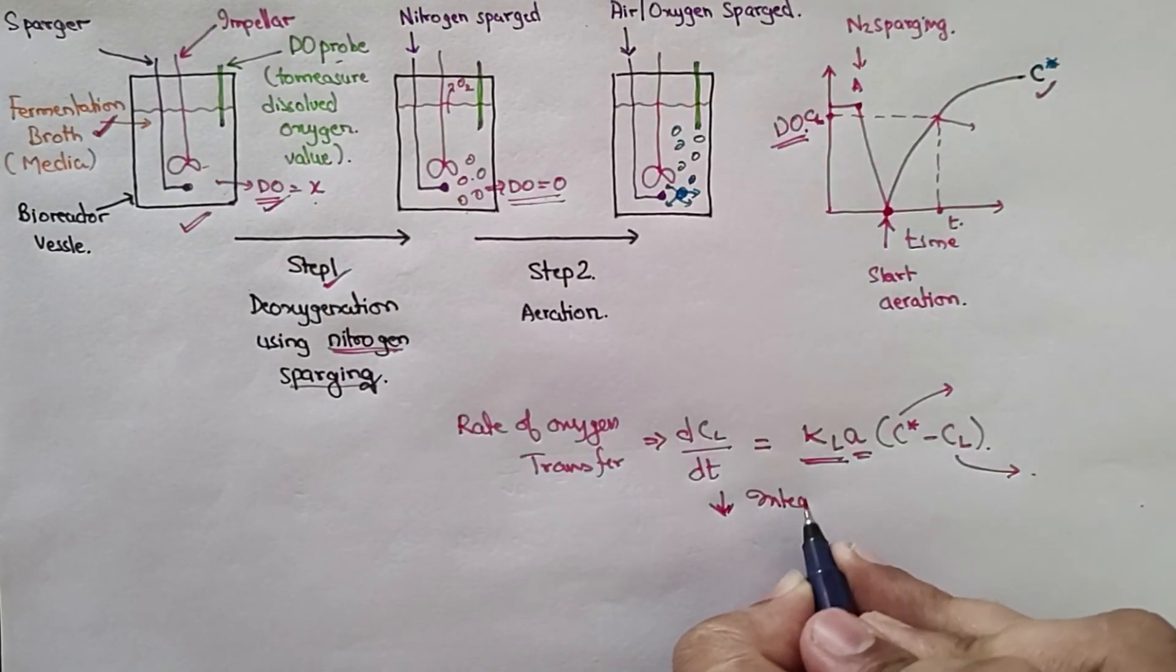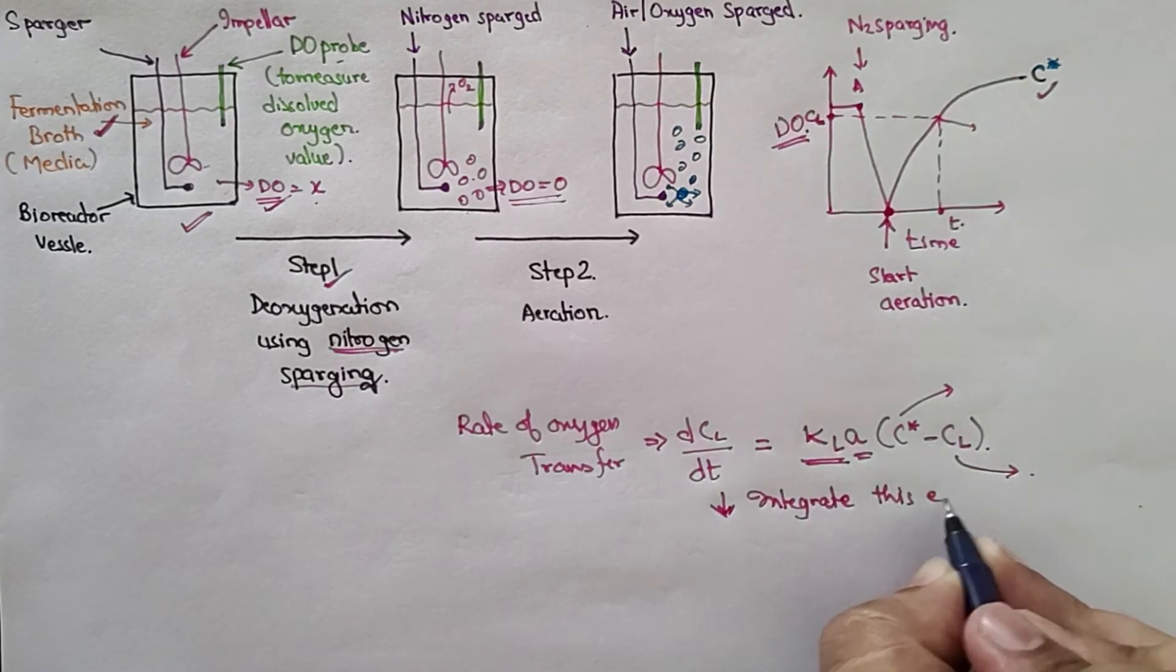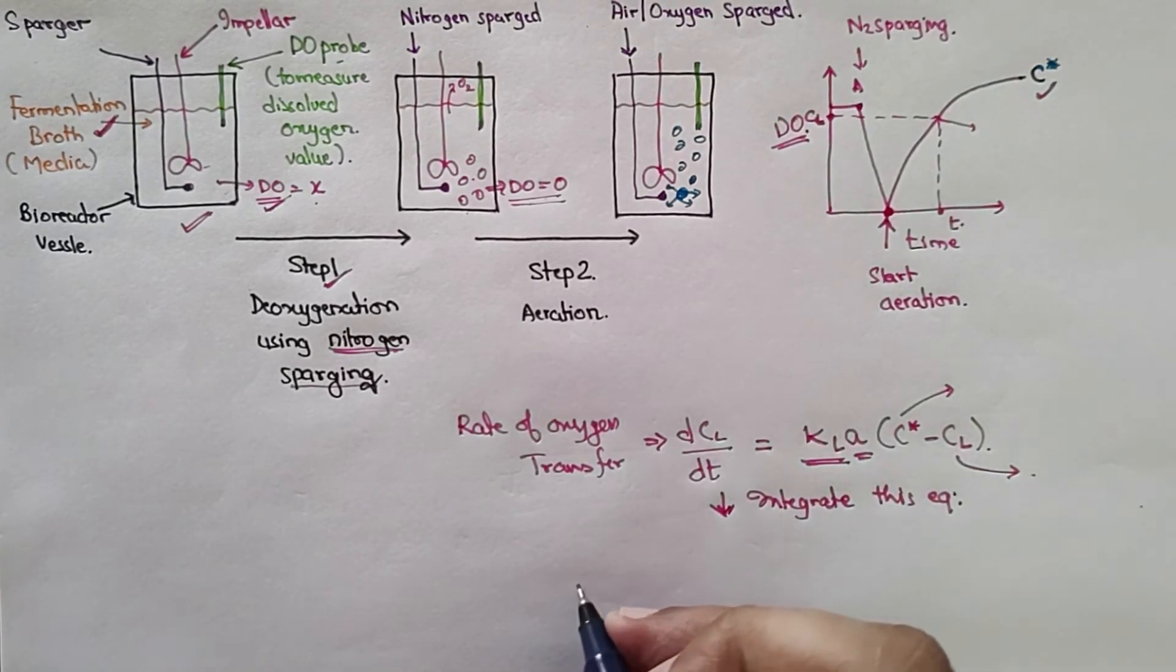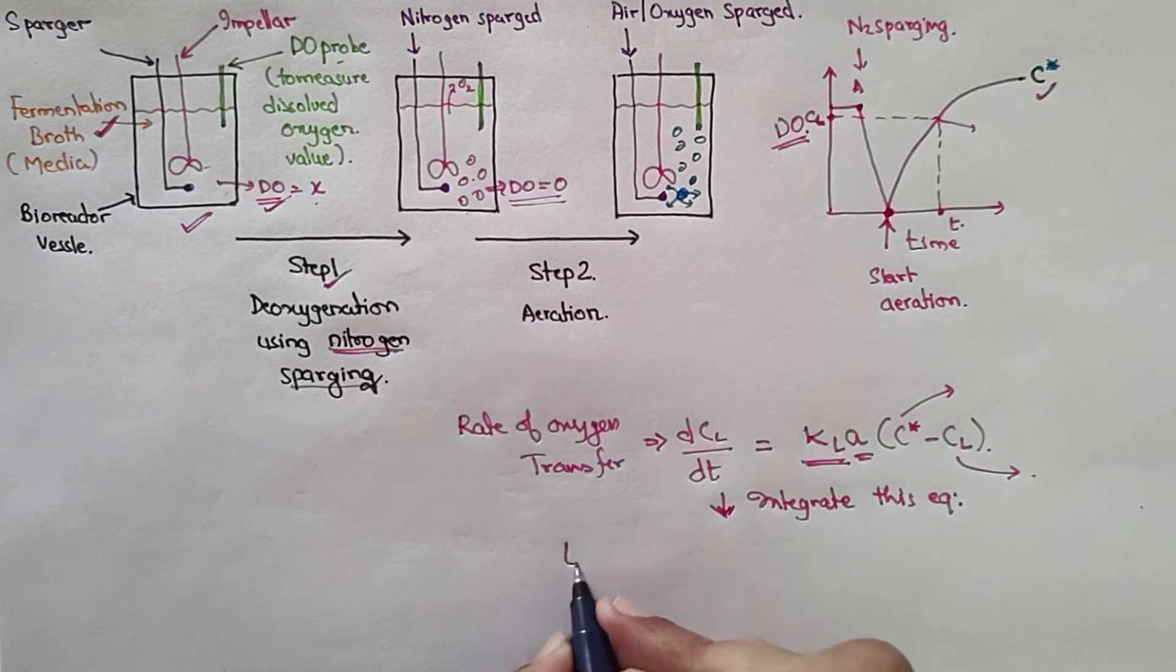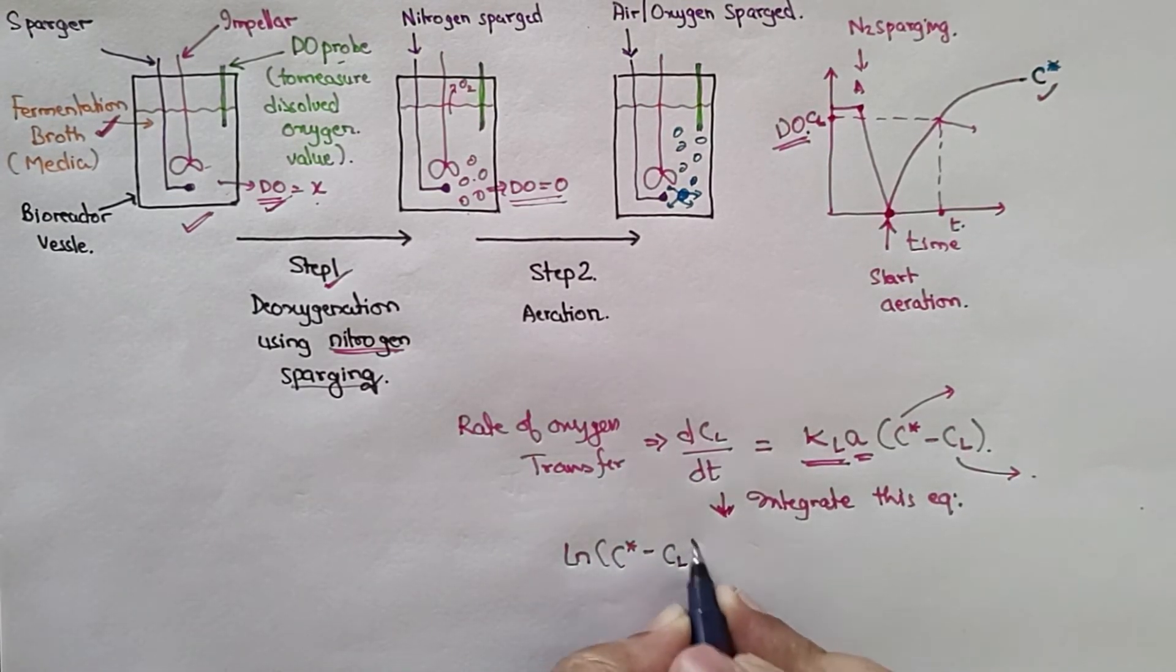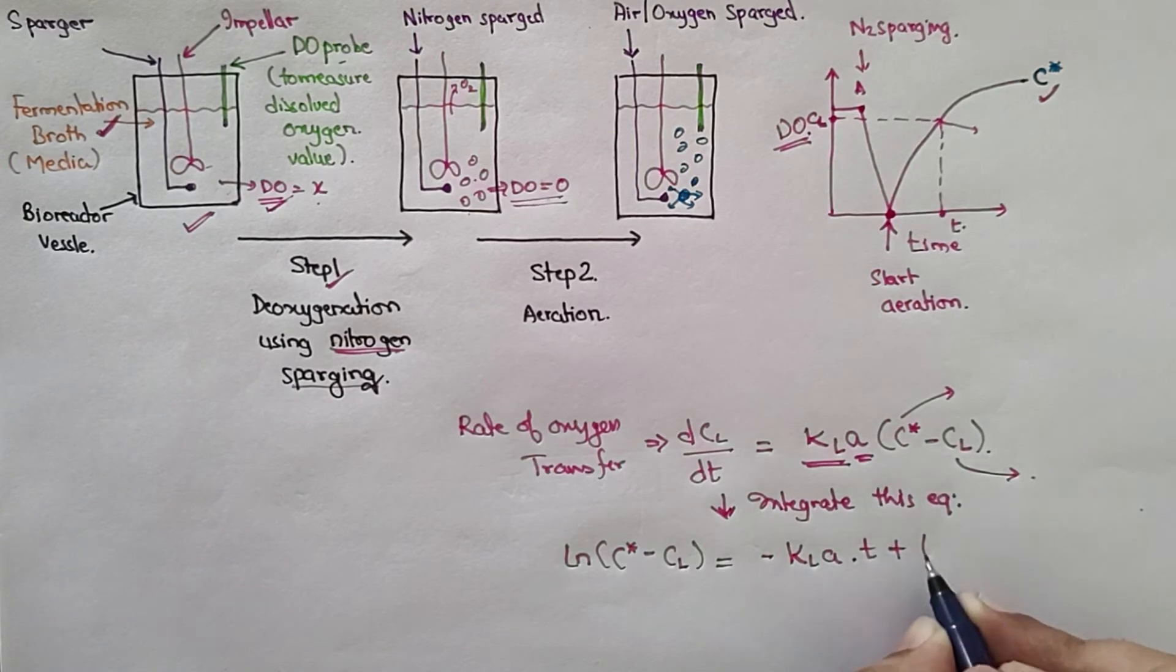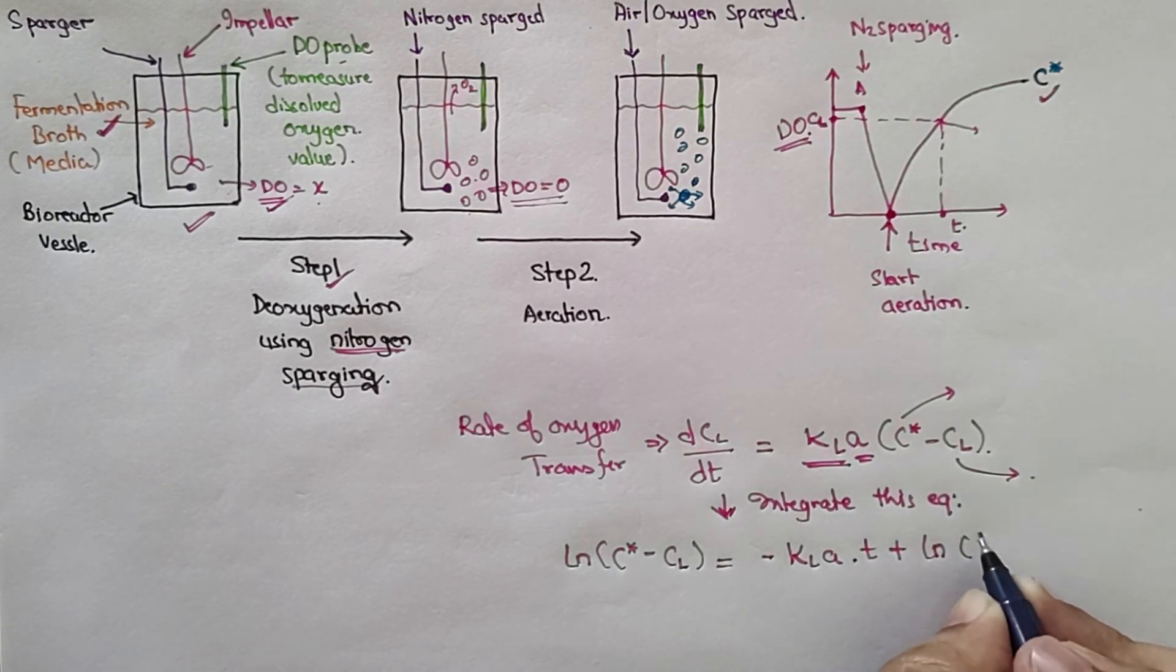If you integrate this equation, what you will get in the final: you will get ln(C* - CL) = -KLA·T + ln(C*).